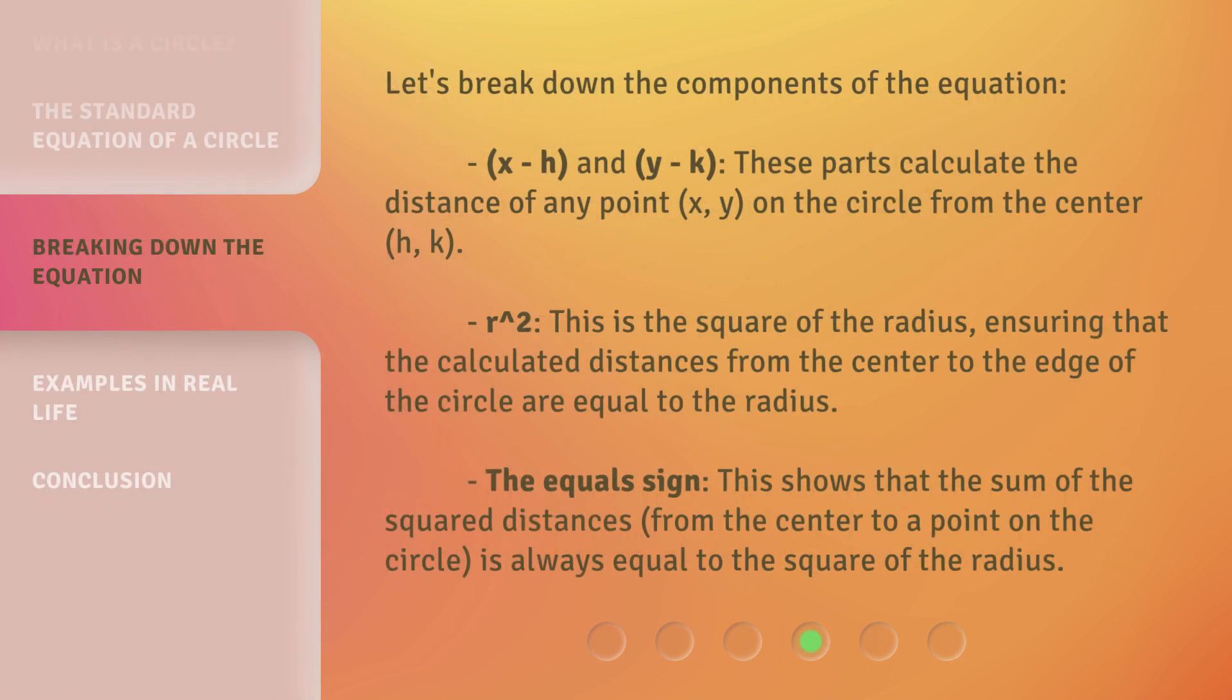Let's break down the components of the equation. (x - h) and (y - k): These parts calculate the distance of any point (x, y) on the circle from the center (h, k).